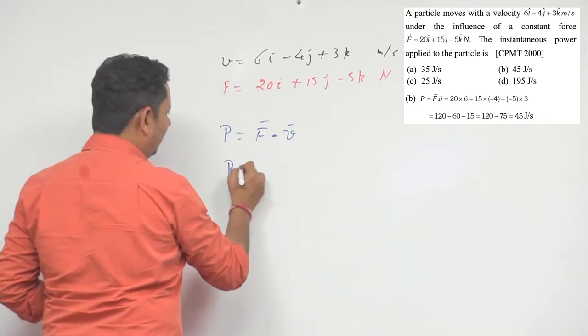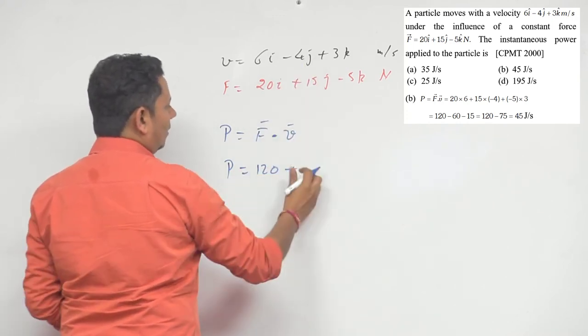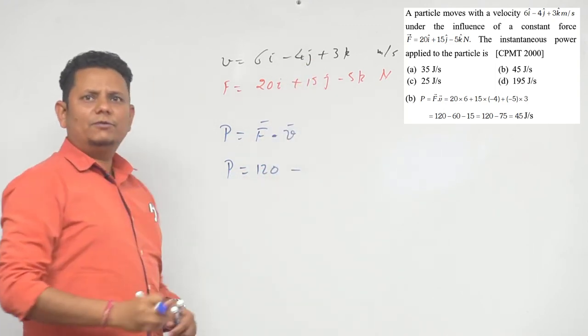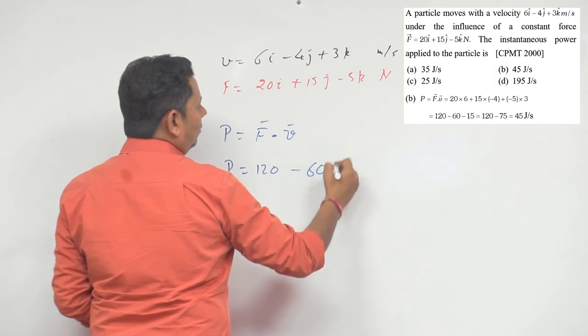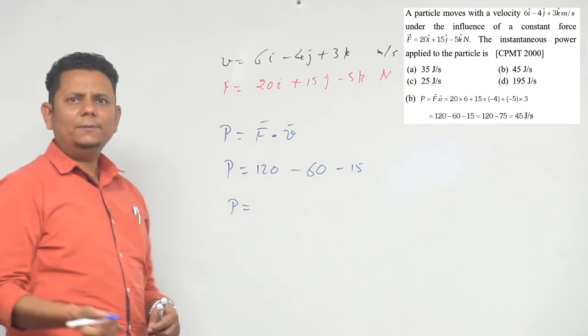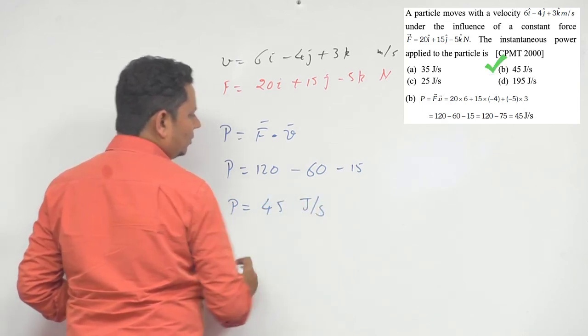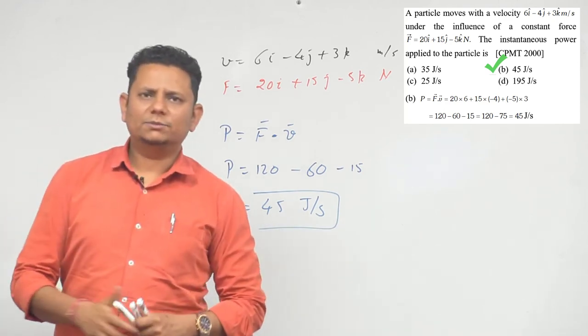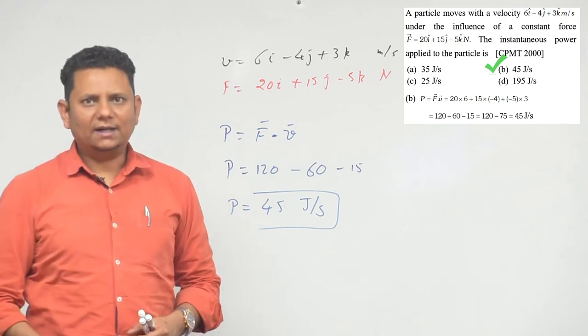So power P will be equal to 6 into 20, that is 120, minus 15 into 4, which equals minus 60, and 3 into 5 equals minus 15. Adding these up, we get the power as 45 joules per second. This is the unit. So this will be our instantaneous power. That means option B, 45 joules per second, will be the correct answer.